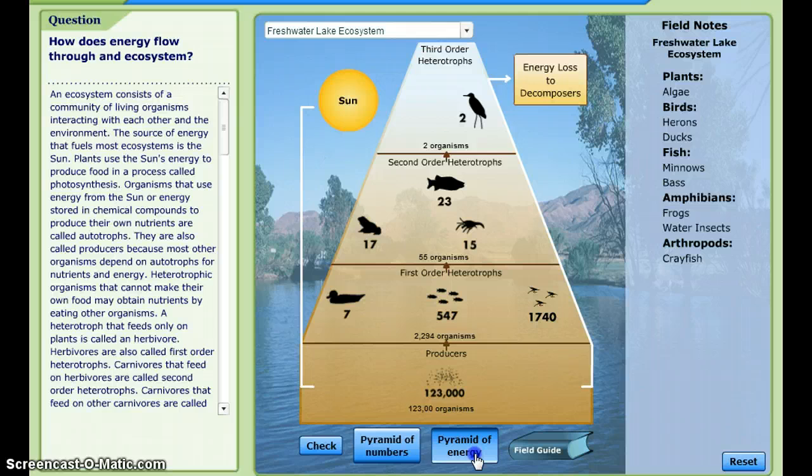They do the same with the Pyramid of Energy, which breaks down the energy availability per trophic level.